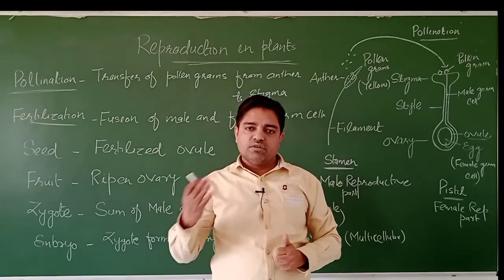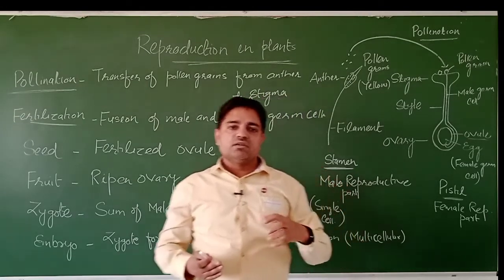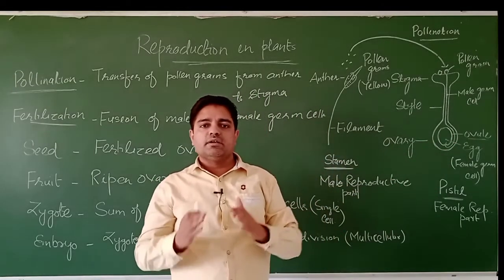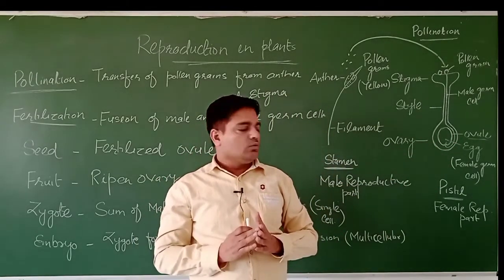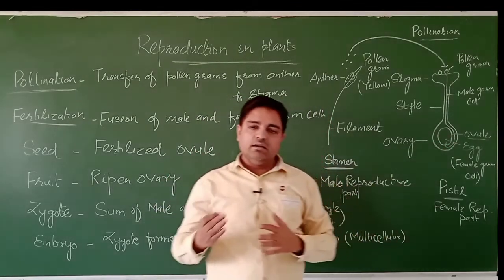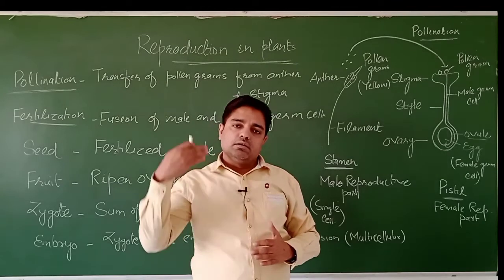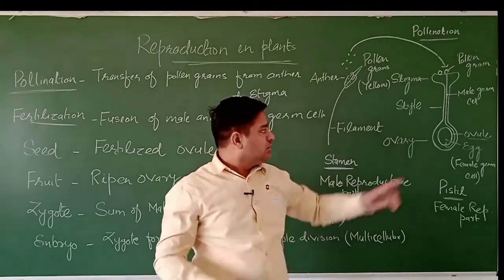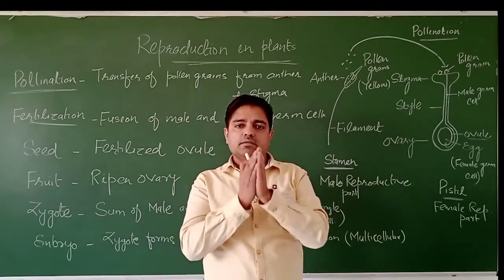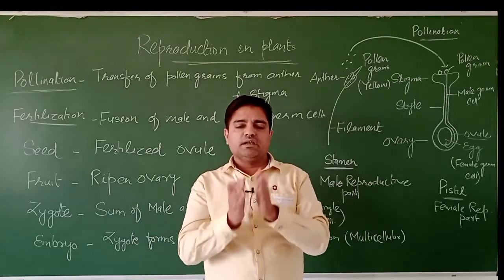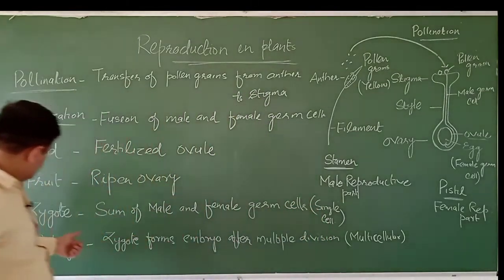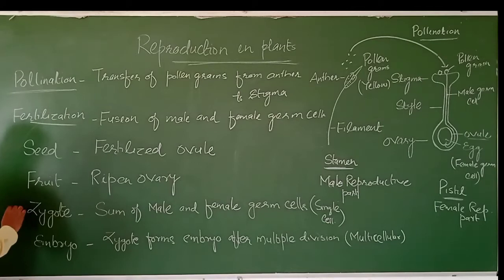Fertilization occurs in the ovary as well as in the ovule, because the ovule is present inside the ovary. Inside the ovule, the egg — the female germ cells — and the male germ cells fuse together to make a single cell. This single cell is known as the zygote.